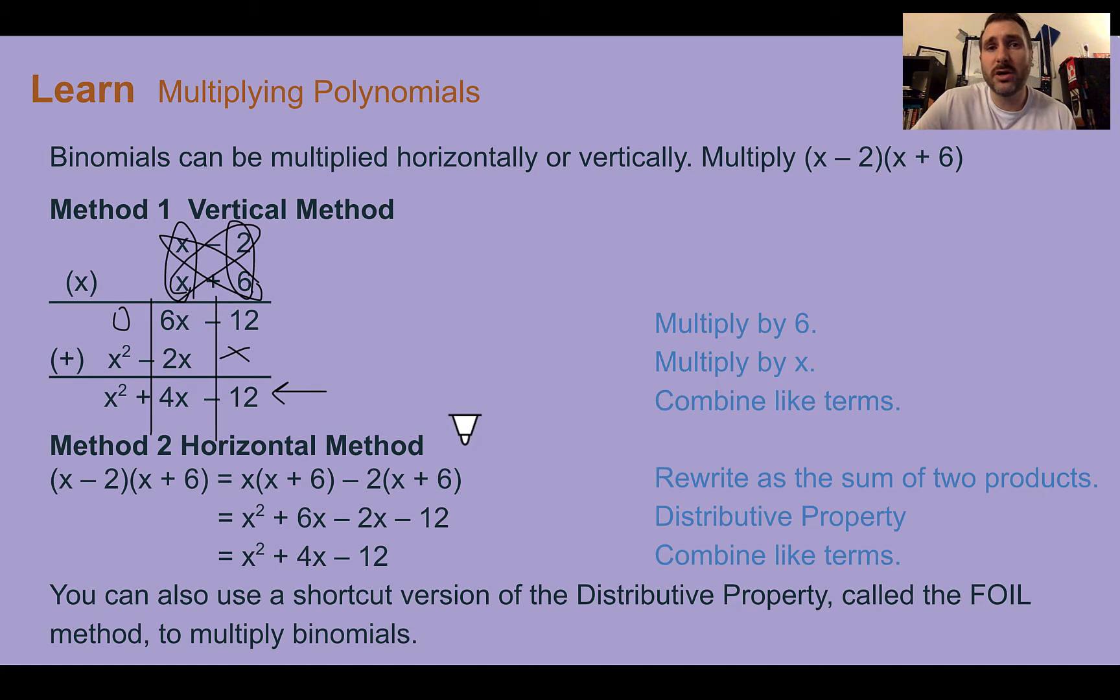Our other method we can use is a horizontal method, and that involves taking each term in the first and multiplying it to everything in the second. Now, this method, we're going to learn another strategy to help us out, as it can be a little bit harder to keep track of, but it is not impossible.